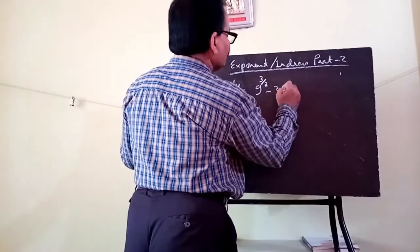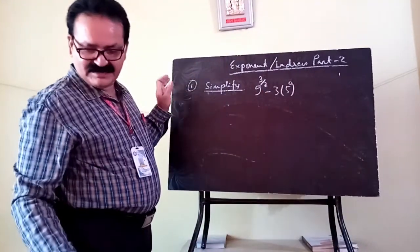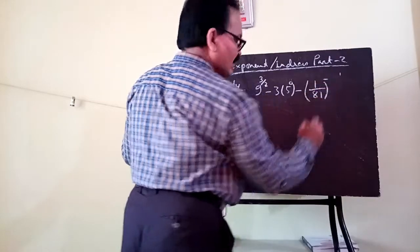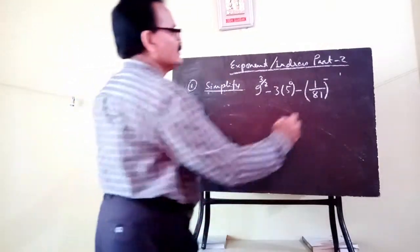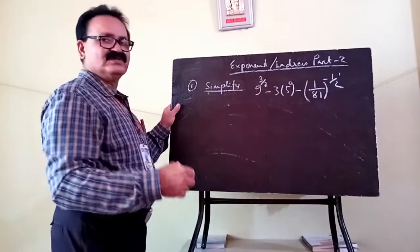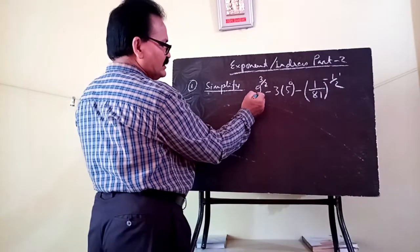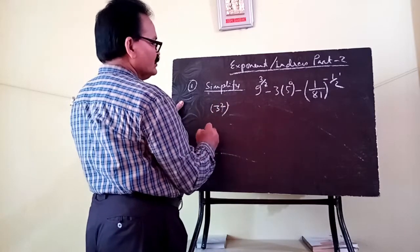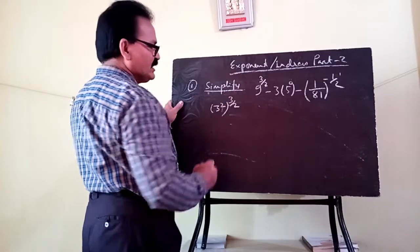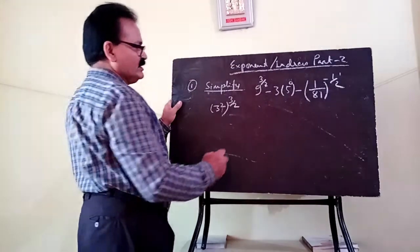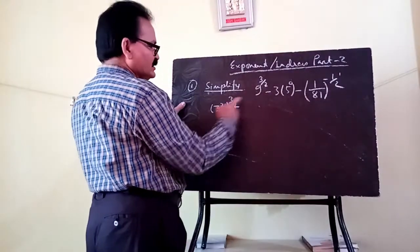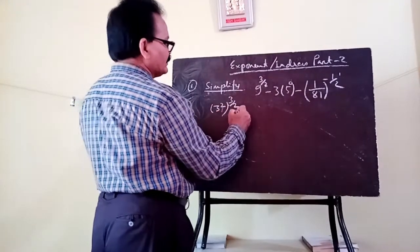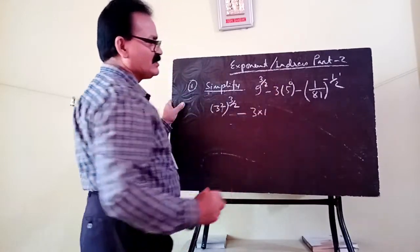So this is the problem. Now we solve it. Here, 9 can be written as 3 to the power 2. The power on 9 is 3 by 2, so we have 3 squared, whole to the power 3 by 2. Then, minus 3 into — as you know — 5 to the power 0 equals 1, so that term becomes minus 3 into 1.